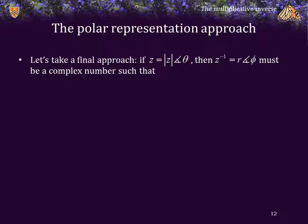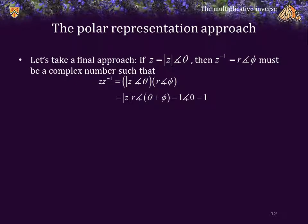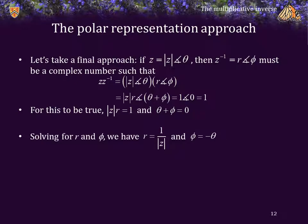Finally, let's take another approach. If z is equal to the magnitude of z phase theta, then the inverse must be some number of the form R phase phi. That number R phase phi must be a complex number such that the product of z and its multiplicative inverse equals the magnitude of z times R phase theta plus phi, and that must equal 1. But 1 is 1 phase 0. For this to be true, the magnitude of z times R must equal 1, and theta plus phi must equal 0. Solving for R and phi: R is 1 over the absolute value of z, and phi must therefore be negative theta. Thus, the multiplicative inverse of z is a value that has 1 over the magnitude of z phase negative theta.